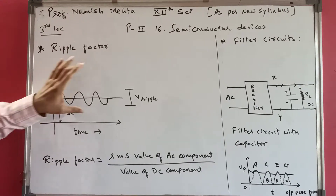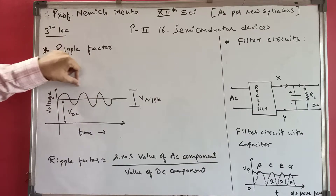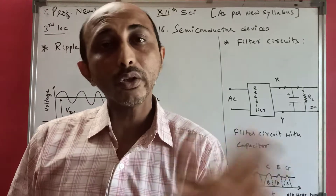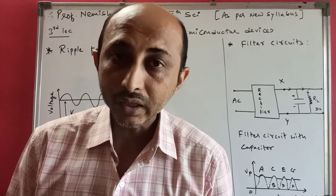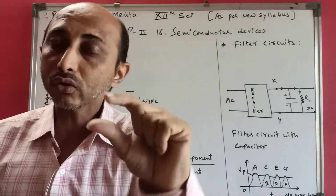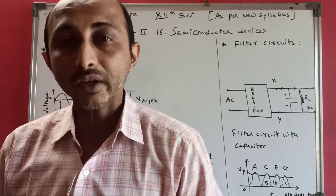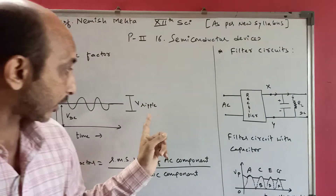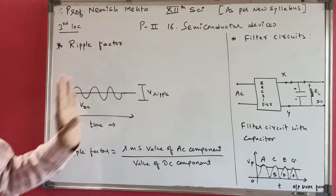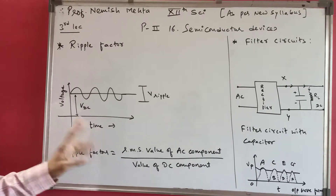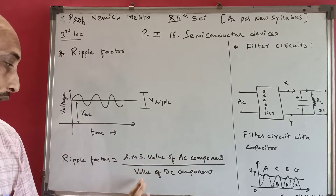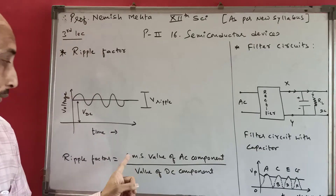This residual AC in the DC output is what we refer to as the ripple factor. We can see fluctuations - in some parts it is unidirectional DC, but there is variation because some part remains as an AC component. The ripple factor is defined as the RMS value of the AC component divided by the value of the DC component.